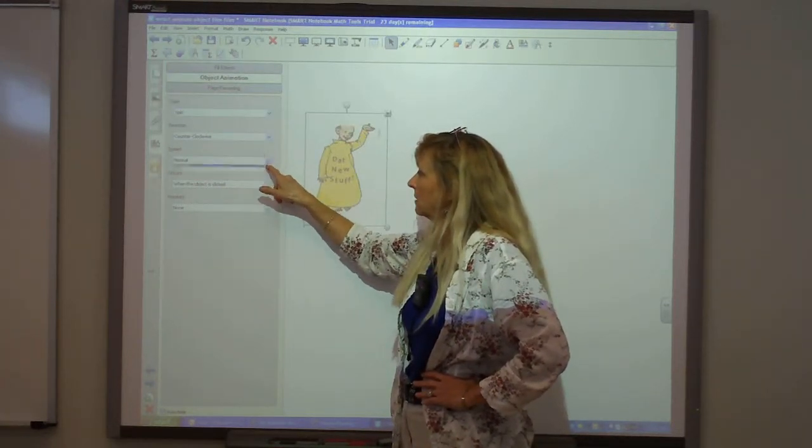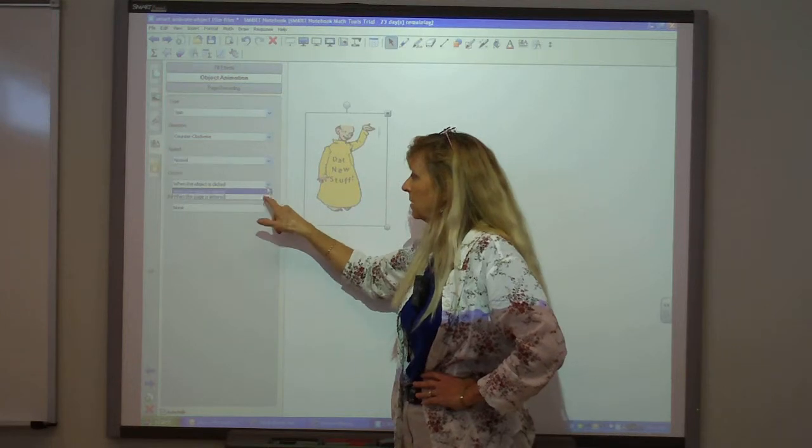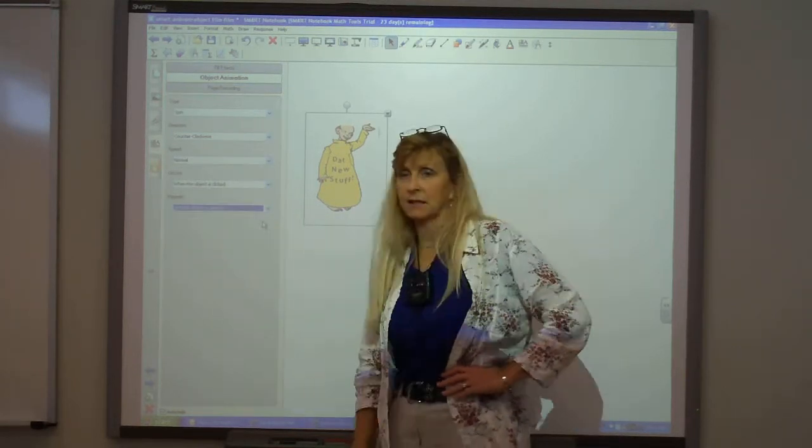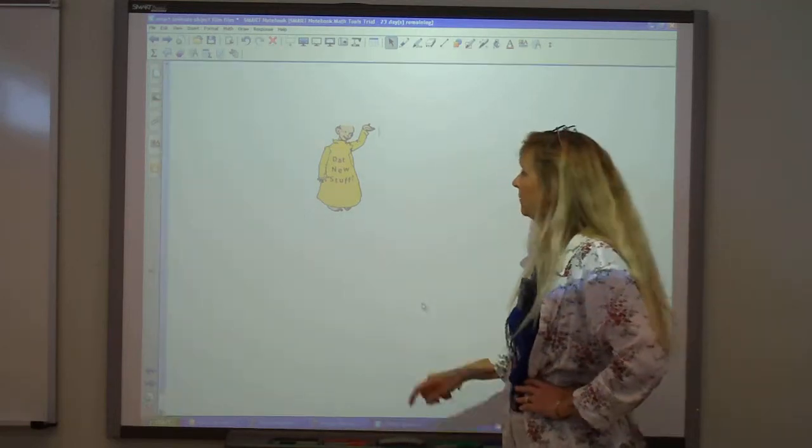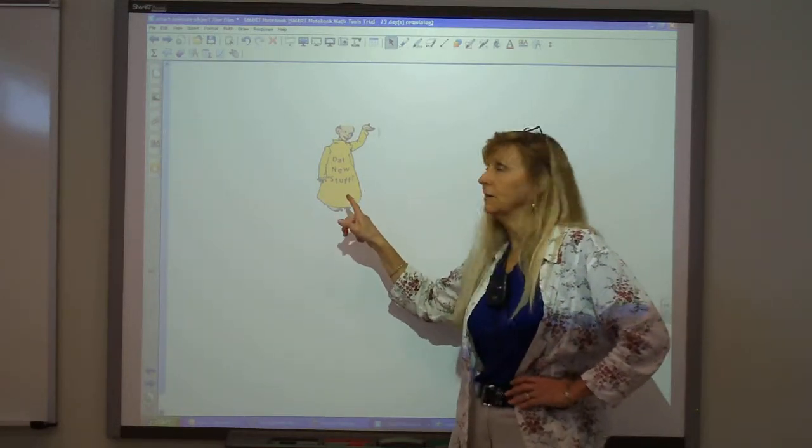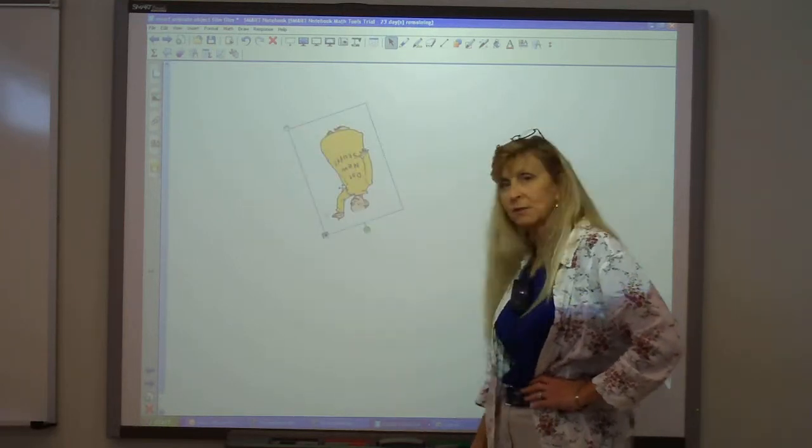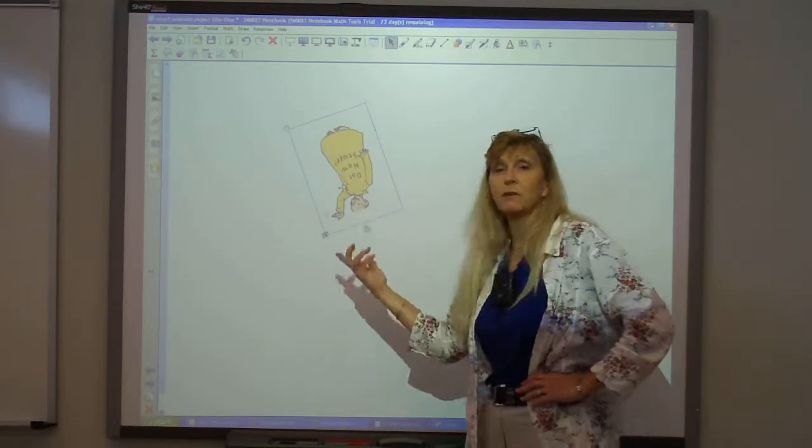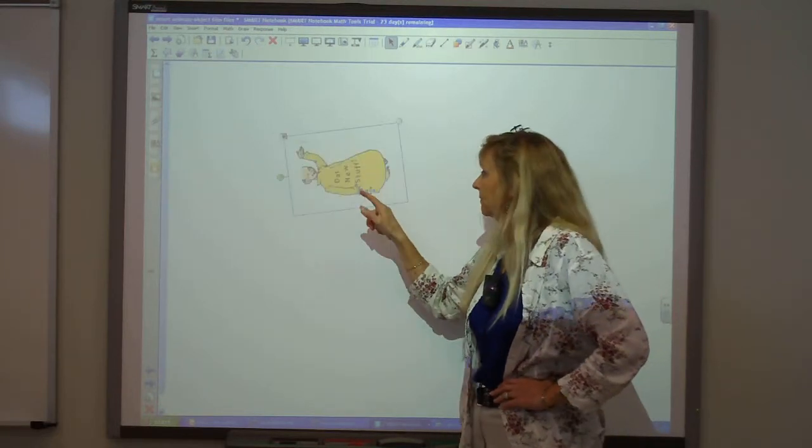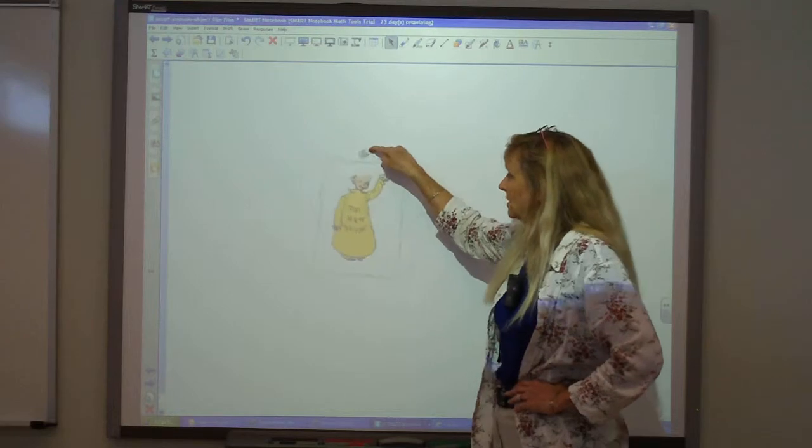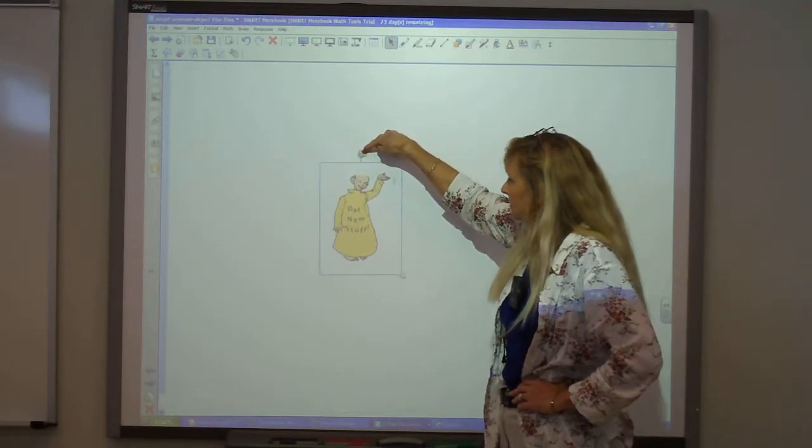Clockwise or counterclockwise, speed is normal, when the object is clicked, and repeat until the object is clicked again. Let's check it out. So right now, Yellow Kid, can you do it? Click it. Then when I click it, it will stop in whatever position of the spin it's in. And of course, you can always adjust that with your settings.